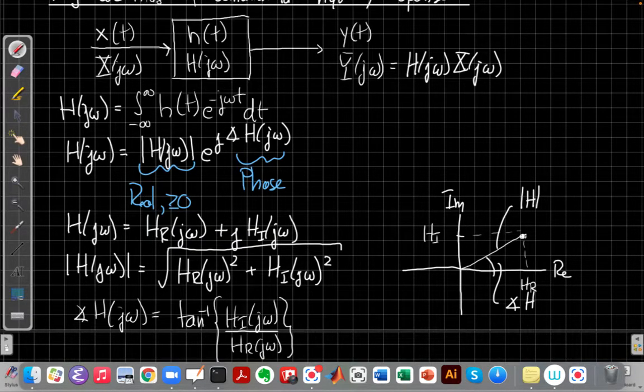And the big advantage, the big win for polar forms of complex numbers is when it's time to multiply things. Adding and subtracting works well with real and imaginary parts. Multiplying and dividing complex numbers works better in polar form. So let's go to a new page and see how that works out.